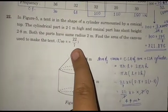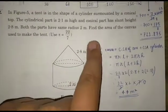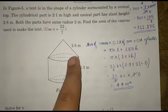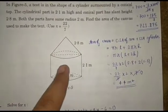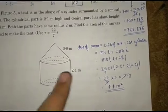For finding the area of canvas used, we calculate the curved surface area of the cone and the curved surface area of the cylinder, which gives us 44 square meters total after calculation.